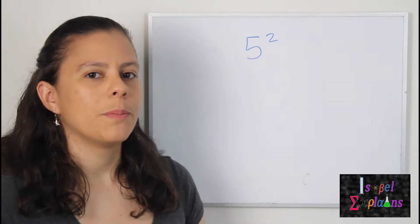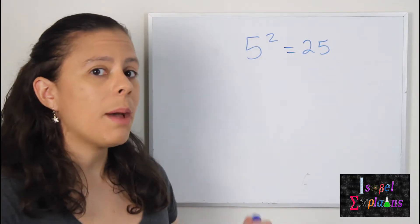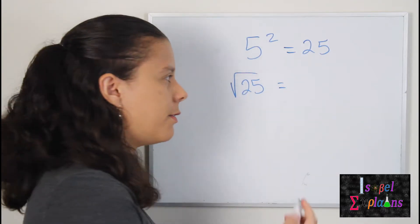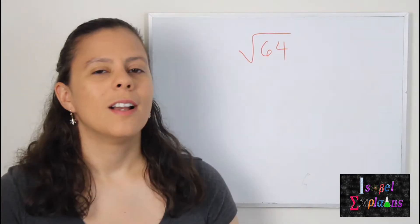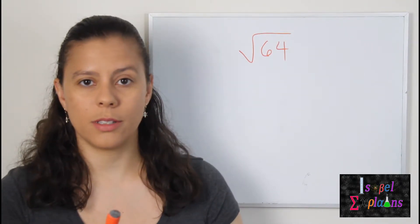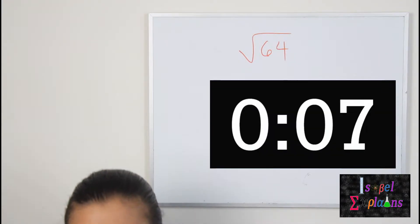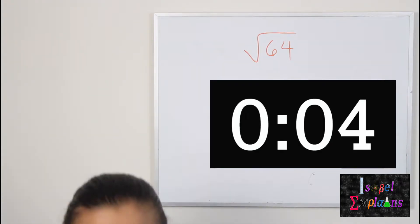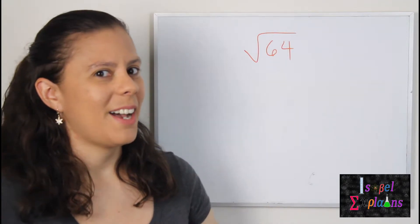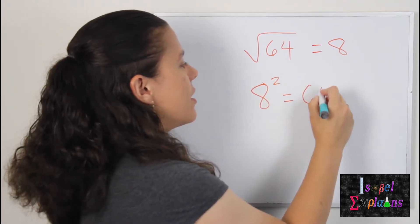Let's do another example. We know that 5 squared equals 25. That means, then, that the square root of 25 equals 5. Now you do it. What is the square root of 64? I'll give you 10 seconds. The answer is 8 because 8 squared equals 64.